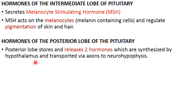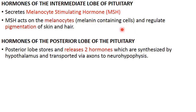Coming to the hormones of the intermediate lobe of the pituitary: it secretes a single hormone called melanocyte stimulating hormone (MSH). MSH acts on melanocytes — melanin-containing cells that provide pigmentation — and regulates pigmentation of the skin and hair.